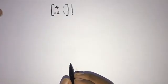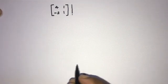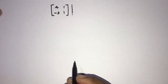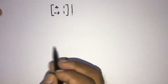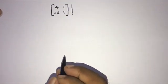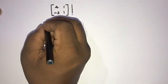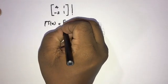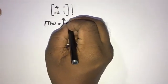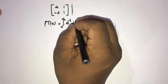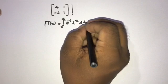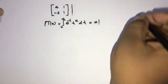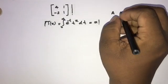Welcome to the mathematics channel. Today we are going to talk about an interesting topic: the factorial of a matrix. There is a problem because factorials are only defined for natural numbers and 0. Fortunately, we have the Pi function. We know that Γ(x) equals the integral from 0 to infinity of e^(−t) times t^x dt, and this equals x factorial.